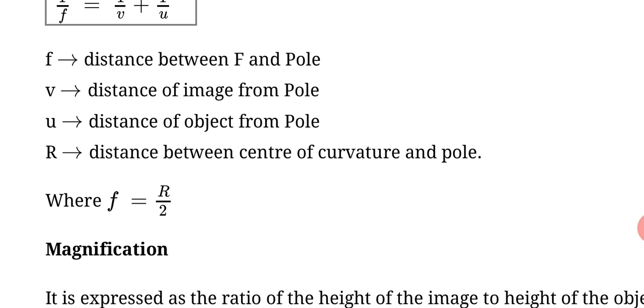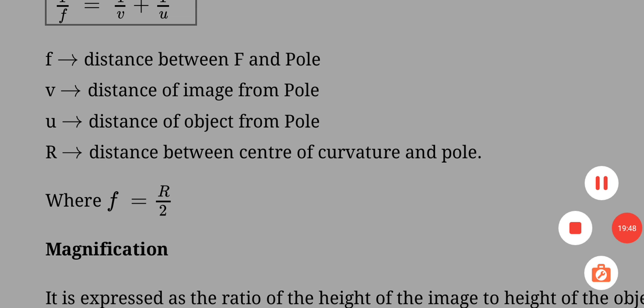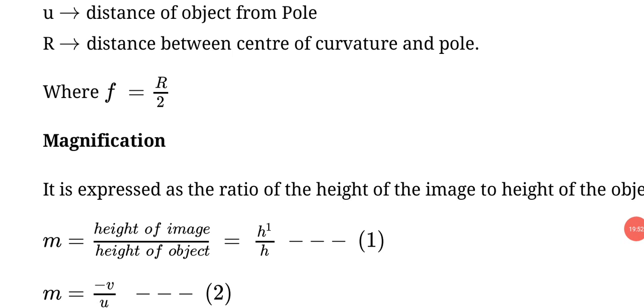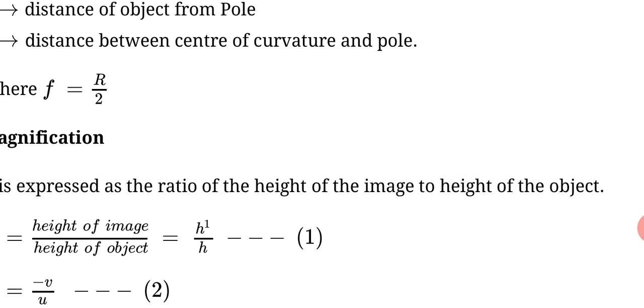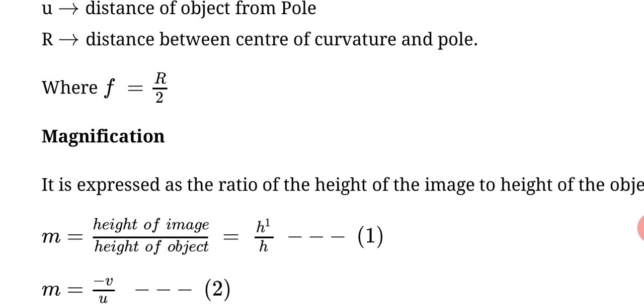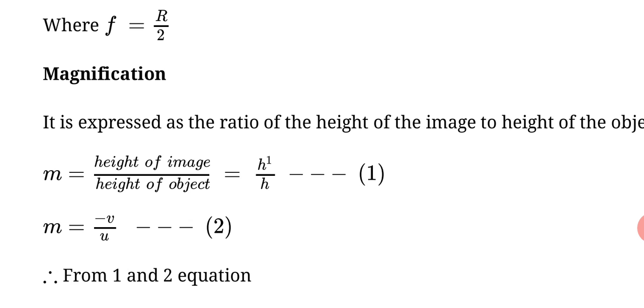Where small f equals R divided by 2. Now magnification: it is expressed as the ratio of height of the image to height of object. This ratio of height of image and height of object comparison we call magnification.